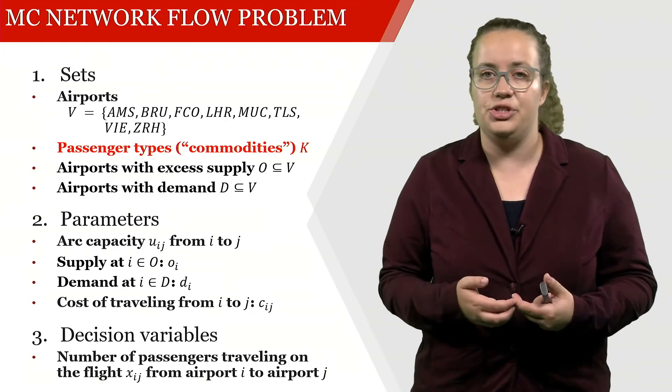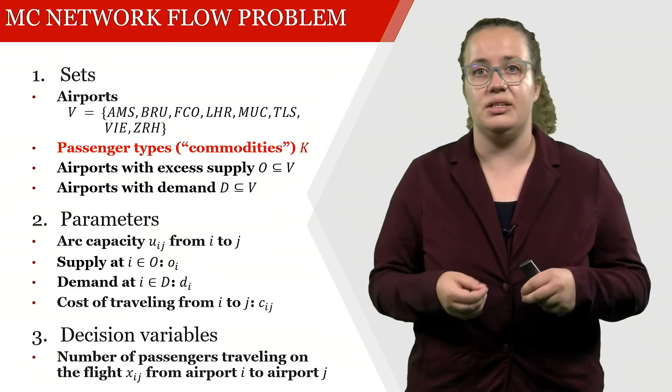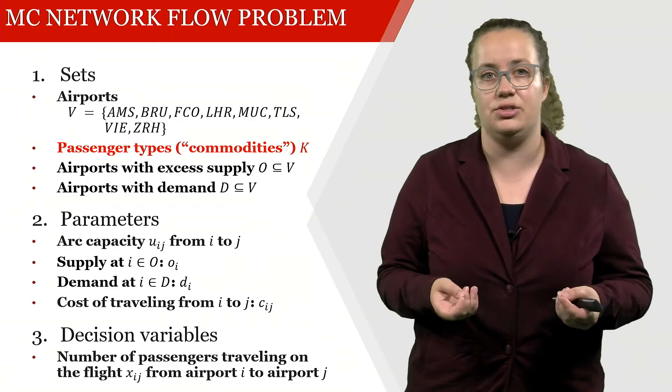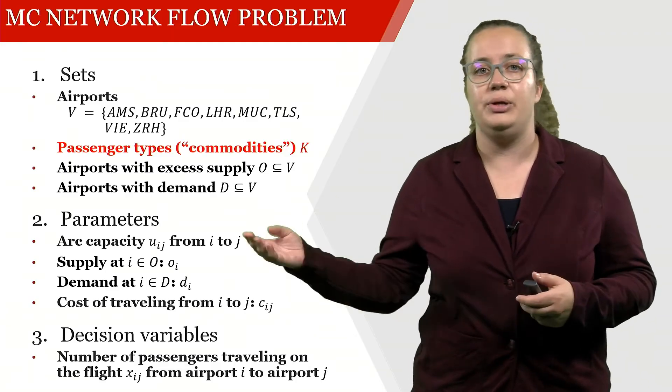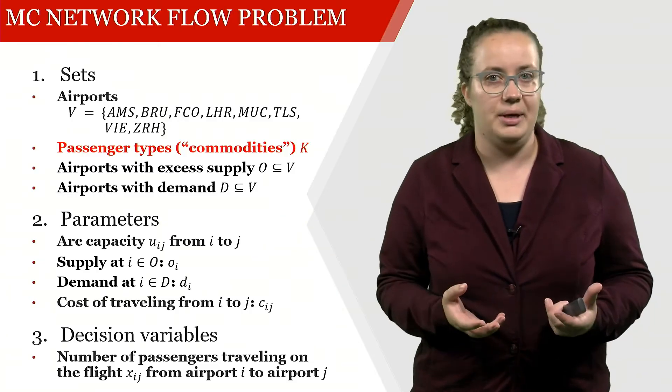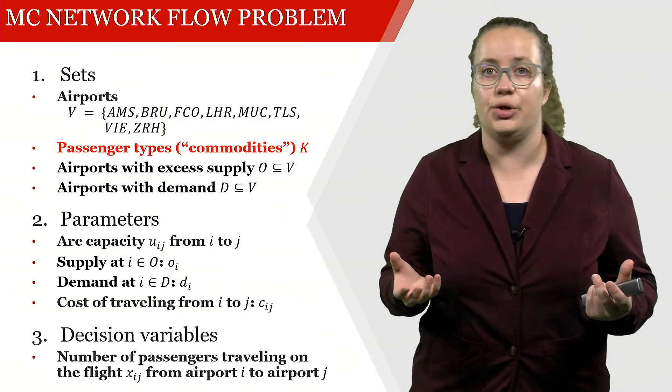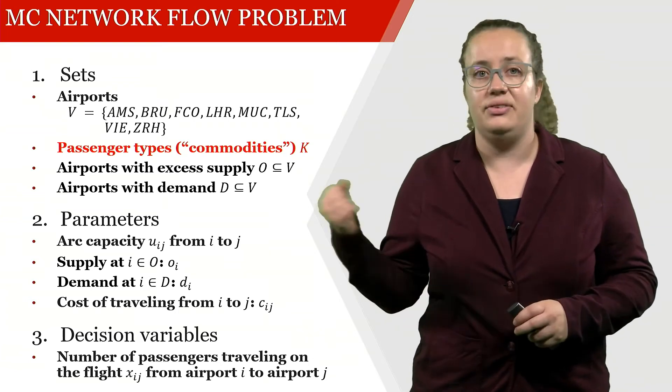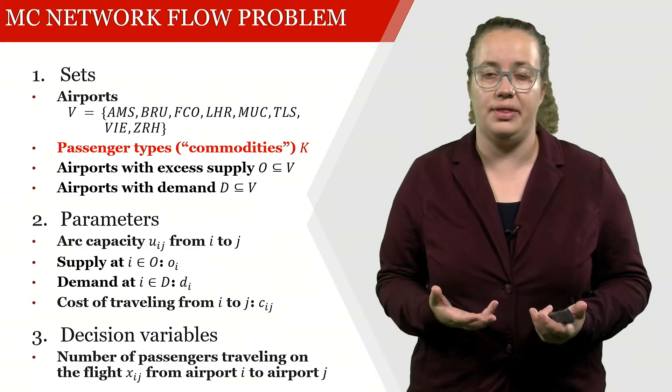Then we have to check which of our parameters and decision variables actually depend on this commodity, so on the passenger type. And if we look into the parameters, the arc capacity does not depend on whether these passengers are currently transferring from A to B or from B to C, but the supply and the demand actually depend on that.